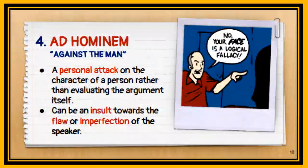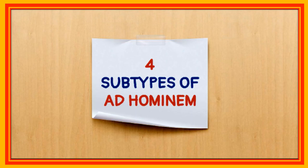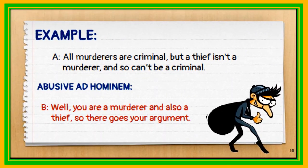The next type of fallacy is ad hominem, or argument against the person. This is a personal attack on the character of a person rather than evaluating the argument itself — it may be an insult toward the flaws or imperfections of the other. There are four subtypes. The first is the abusive subtype, which undermines the credibility of the speaker to the audience. For example, in the argument that all murderers are criminal but a thief isn't a murderer, the abusive ad hominem response is: 'You are a murderer and also a thief, so there goes your argument.'